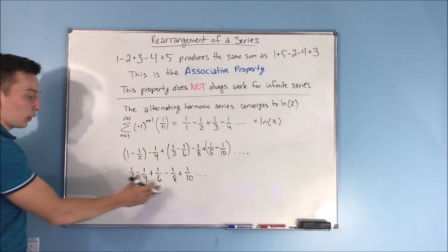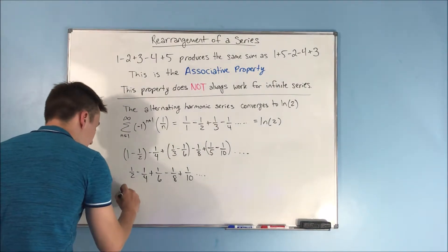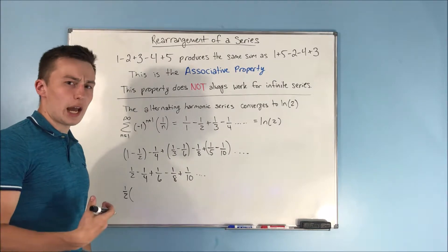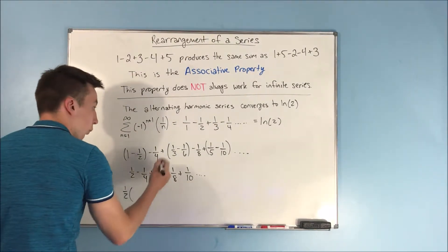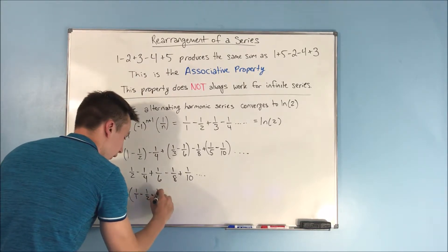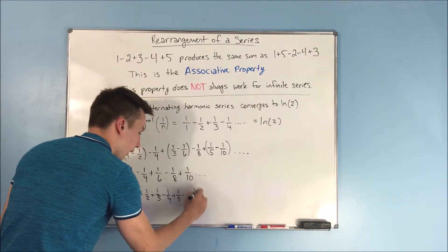Now, if you take out a 1 half here, you pull out a 1 half out of all these terms. You again are going to end up with your alternating harmonic series, but now with a 1 half in front of it. You end up with a 1 half times 1 over 1 minus 1 over 2 plus 1 third minus 1 fourth plus 1 fifth. And that's going to go on and on and on.